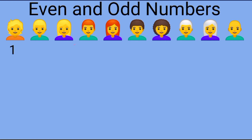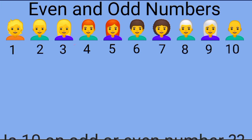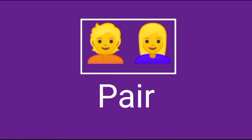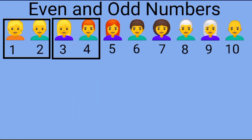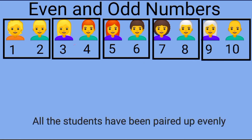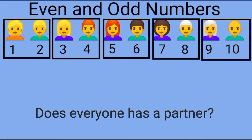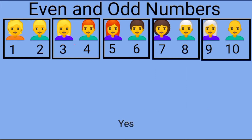Look children, here a few students are standing in a class. Can you count how many students are standing? One, two, three, four, five, six, seven, eight, nine and ten. Now we see whether ten is an odd or even number. If two students come together they form a pair. If students can be paired up, they will get partners. Yes, all the students have been paired up evenly.